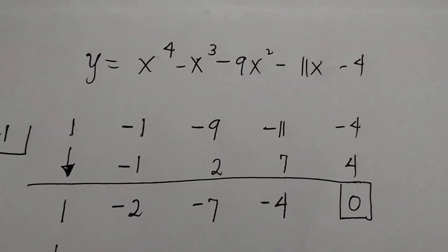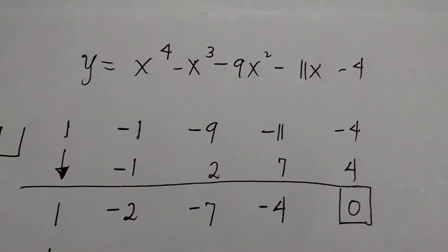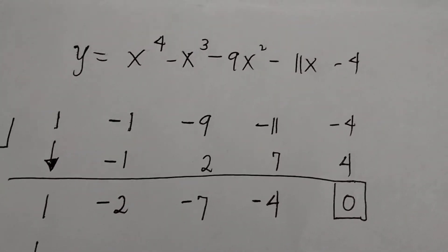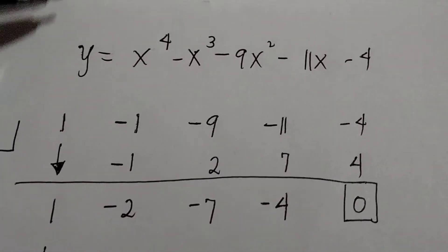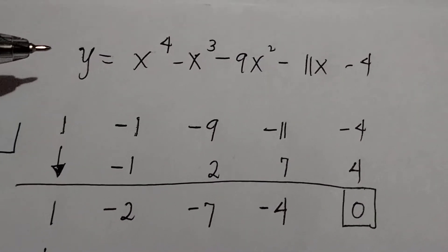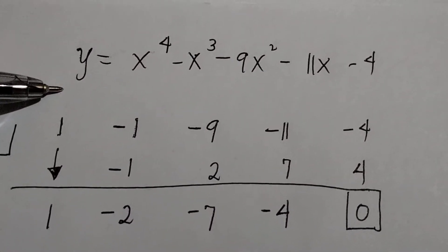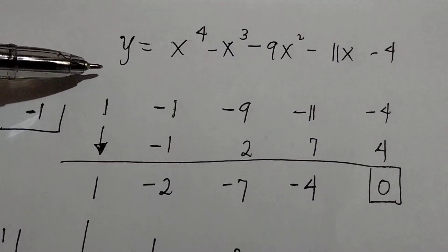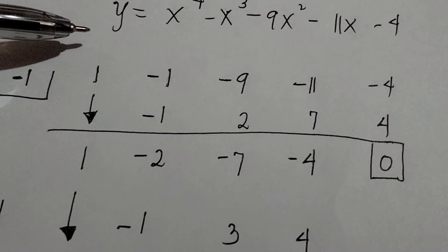Good day everyone! Today you will learn how to write polynomial functions in standard form and factored form. Let's say the given is y equals x raised to the 4th minus x cubed minus 9x squared minus 11x minus 4. You are going to write this in factored form. You may use factoring or apply the rational root theorem.